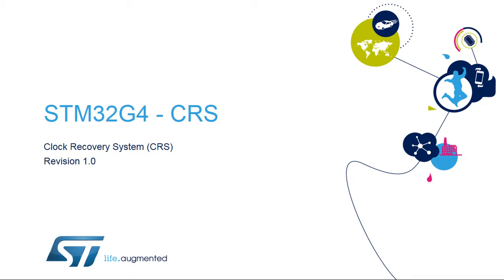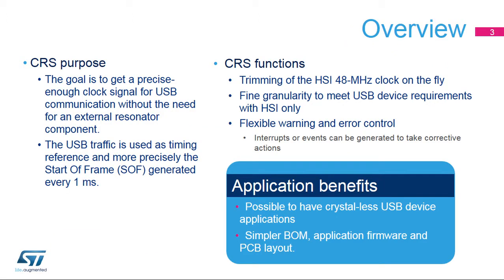Welcome to this presentation of the STM32G4 clock recovery system. It covers the main features of this module used to control the precision of the USB clock frequency. The goal of the clock recovery system is to obtain a precise enough clock signal for use by the USB module without the need for an external resonator component.